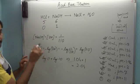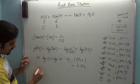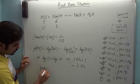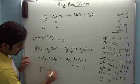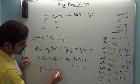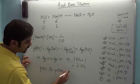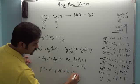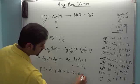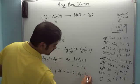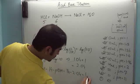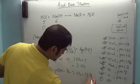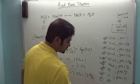Yeh toh aya POH. Ab agar mein pH chahiye, toh pH is fourteen minus POH. And that is fourteen minus 2.04. That is 11.96.